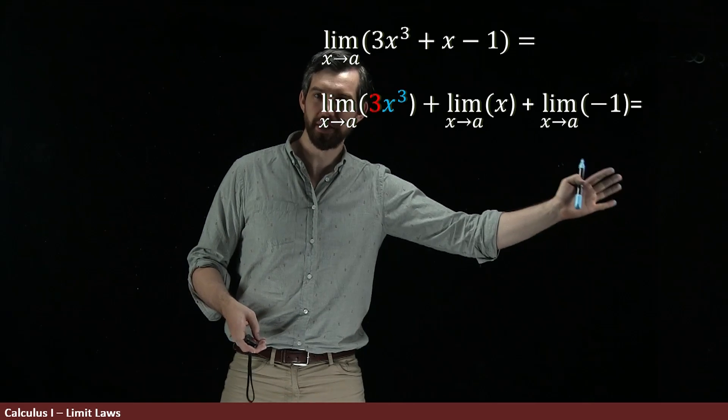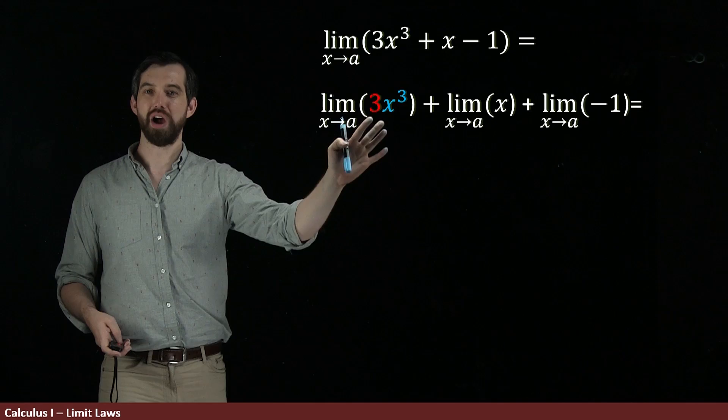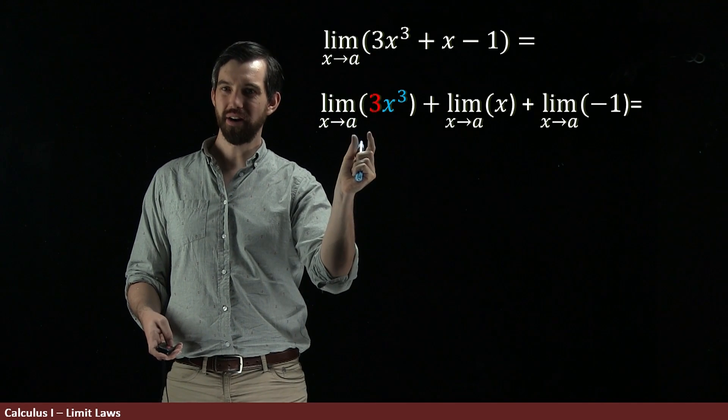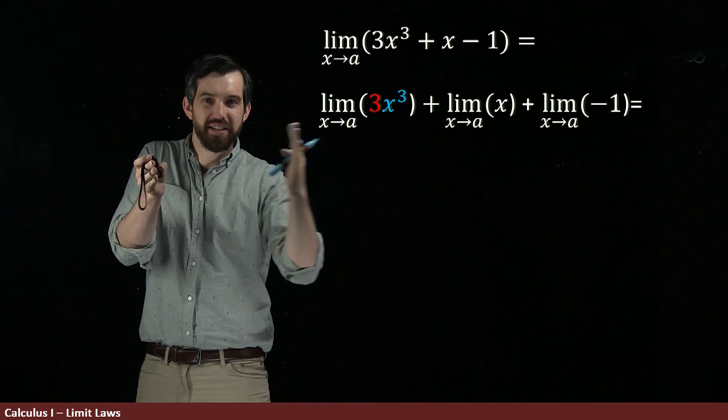And we figured out what the limit of a constant was, and the limit of x was. We know both of those. And I'm also going to try to break this one up. Notice we've got a scalar, and we've got a product. x cubed is like x times x times x.